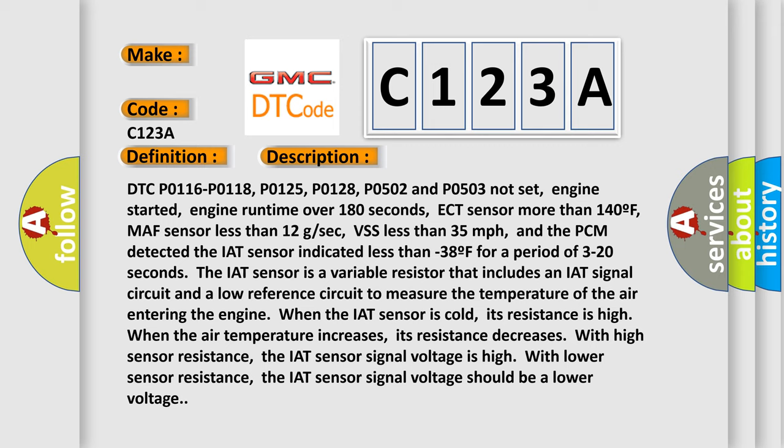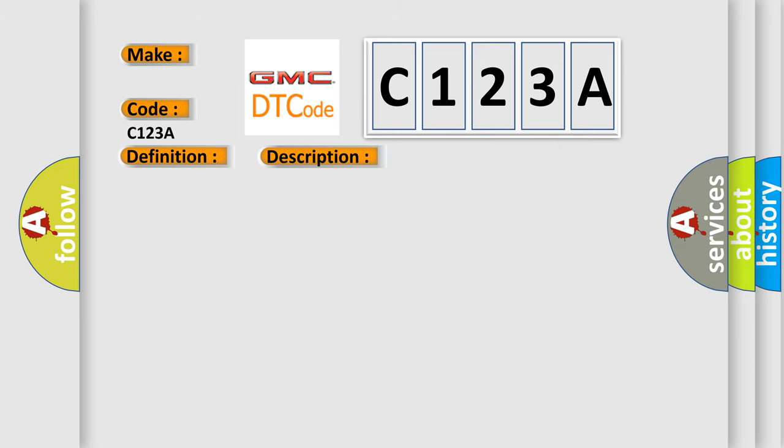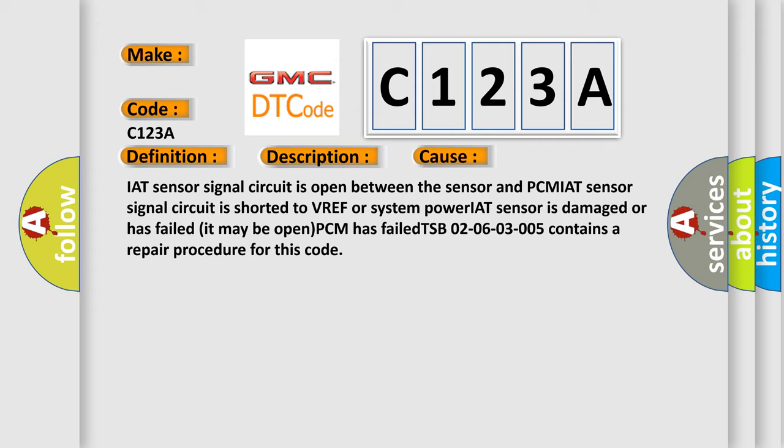The IAT sensor is a variable resistor that includes an IAT signal circuit and a low reference circuit to measure the temperature of the air entering the engine. Even when the IAT sensor is cold, its resistance is high. When the air temperature increases, its resistance decreases. With high sensor resistance, the IAT sensor signal voltage is high; with lower sensor resistance, the signal voltage should be lower. This diagnostic error occurs most often when the IAT sensor signal circuit is open between the sensor and PCM, when the signal circuit is shorted to VREF or system power, when the IAT sensor is damaged or has failed, or when the PCM has failed.